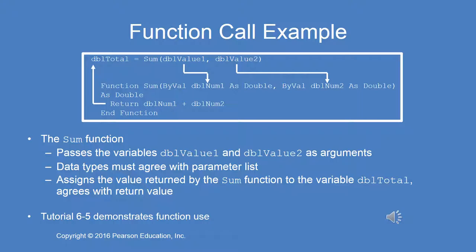Here we're dissecting a function call to the function sum. The function sum has two by-value parameters, and in this particular case we're passing double value one and double value two, which we'll assume are declared variables of type double. This function most likely returns a double. The return value is the sum of double num one plus double num two. So in this function call, the return value is assigned to double total.